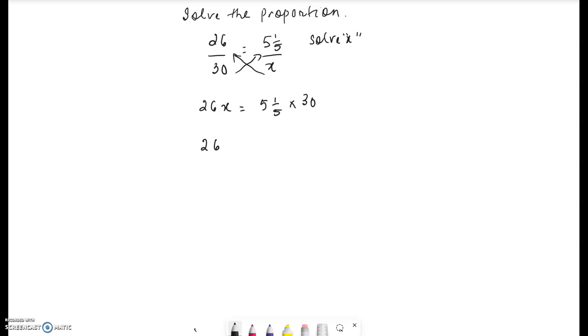So 26x. Notice that if we have to multiply a mixed number with another number, the first thing we need to do is reduce it to an improper fraction. So 5 times 5 is 25 plus 1, 26 divided by 5 times 30.